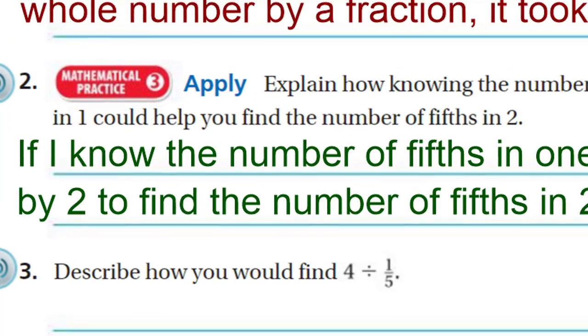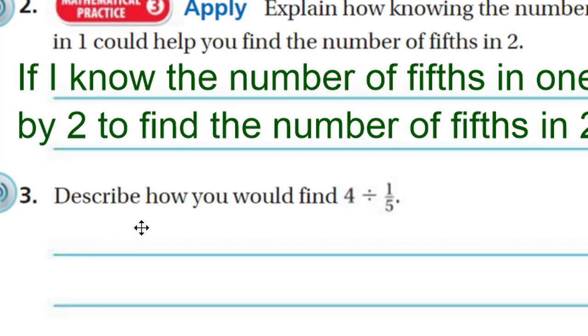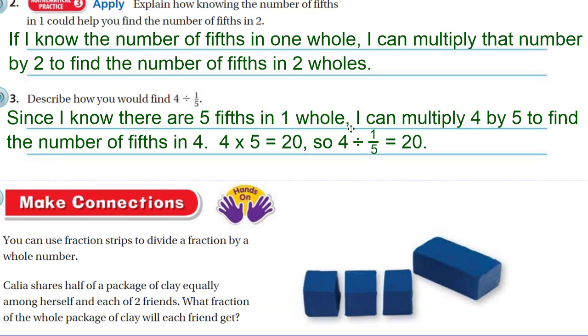Nice! Describe how you would find 4 divided by 1-fifth. Okay. I think what I would do here is, since I already know there's 5 fifths in 1 whole, I can multiply 4 to find the number of fifths in 4. 4 times 5 is 20. And that means 4 divided by 1-fifth would equal 20. Let me write those thoughts down. So since I know there are 5 fifths in 1 whole, I can multiply 4 by 5 to find the number of fifths in 4 wholes. 4 times 5 is 20. So that must mean, therefore, 4 divided by 1-fifth is equal to 20.